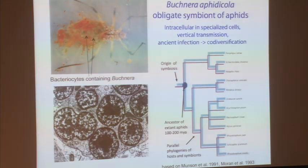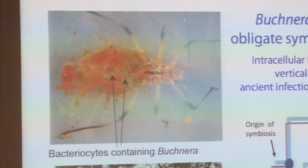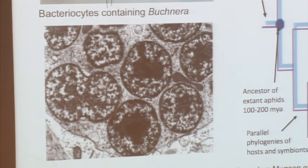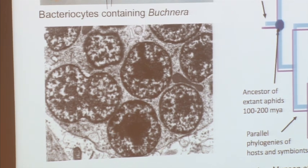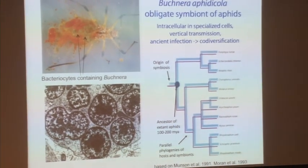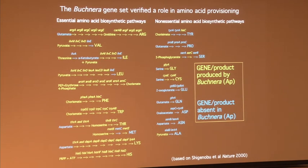They're living inside bacteriocytes — specialized cells. Here's an opened aphid, and these grayish cells are the bacteriocytes. Each bacteriocyte can hold something like 10,000 bacteria, and there may be 50 to 100 bacteriocytes depending on the aphid species. Each bacterial cell is surrounded by a host-derived membrane. Paul Bauman originally cloned and sequenced a lot of genes having to do with amino acid biosynthesis in Buchnera.